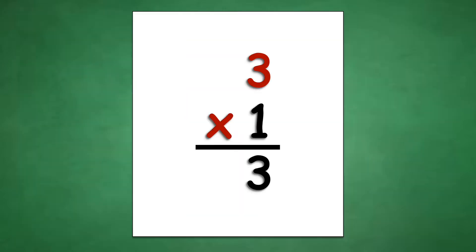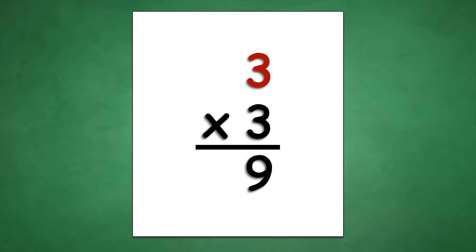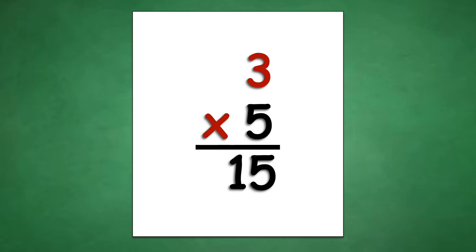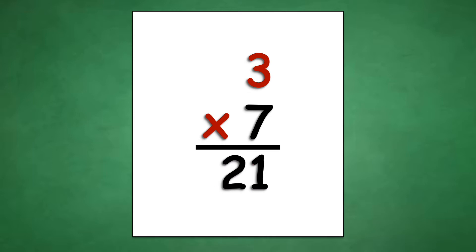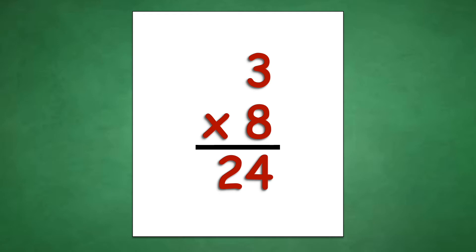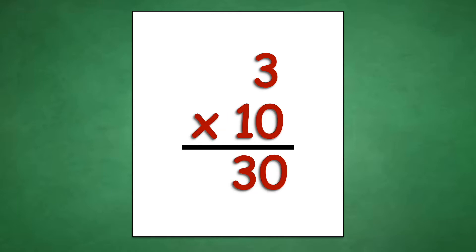Table of 3: 3 times 1 equals 3, 3 times 2 equals 6, 3 times 3 equals 9, 3 times 4 equals 12, 3 times 5 equals 15, 3 times 6 equals 18, 3 times 7 equals 21, 3 times 8 equals 24, 3 times 9 equals 27, 3 times 10 equals 30.